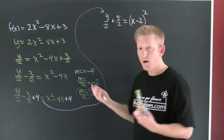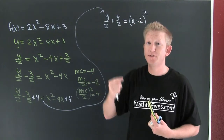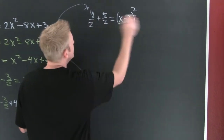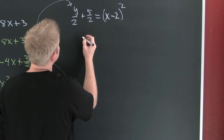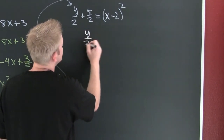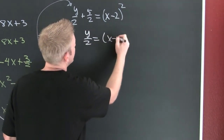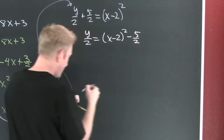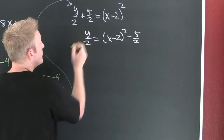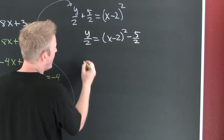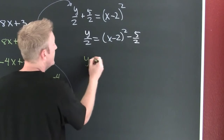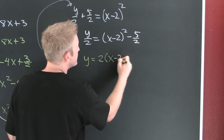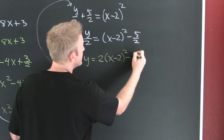This last step is different from the usual completing-the-square menu. Instead of solving for x, we're solving for y. So I subtract off that 5 halves, giving y over 2 equals x minus 2 squared minus 5 halves. Then I multiply both sides by 2, giving y equals 2 times (x minus 2) squared minus 5.